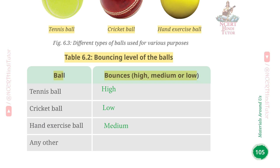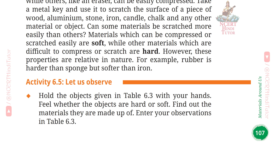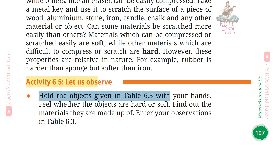Table 6.2 — Bouncing levels of the ball. Column 1: Ball, Column 2: Bounces (High/Medium/Low). 1. Tennis ball — bounces High. 2. Cricket ball — bounces Low. 3. Hand exercise ball — bounces Medium. Activity 6.5: Let us observe. Hold the objects given in Table 6.3 with your hands and feel whether the objects are hard or soft. Find out the materials they are made up of.